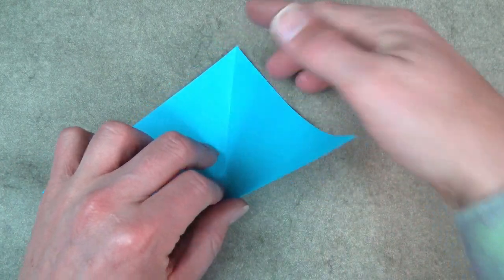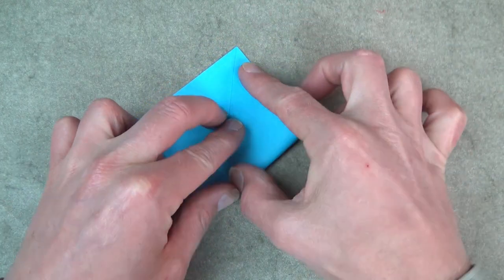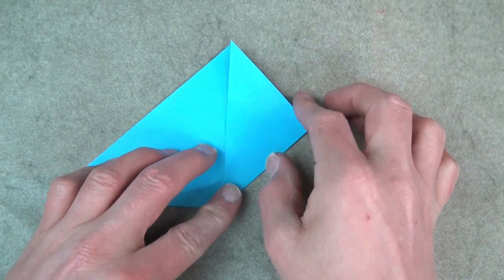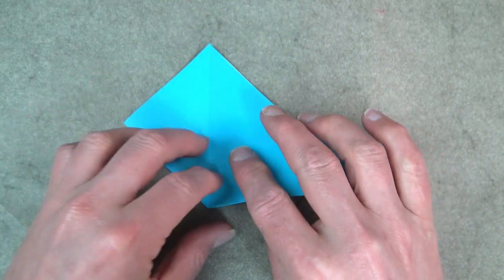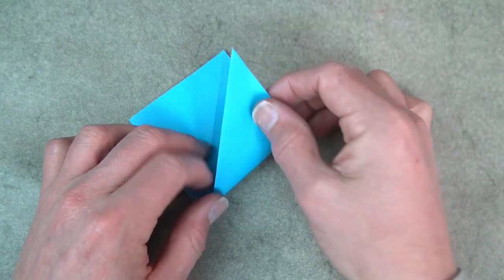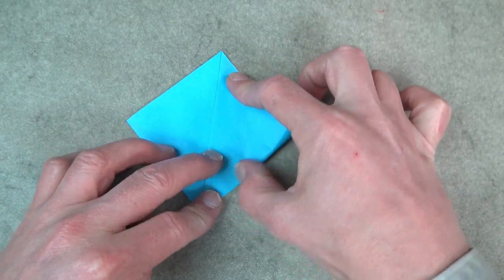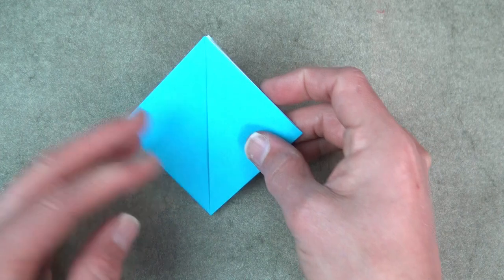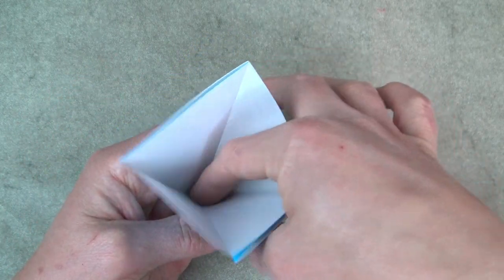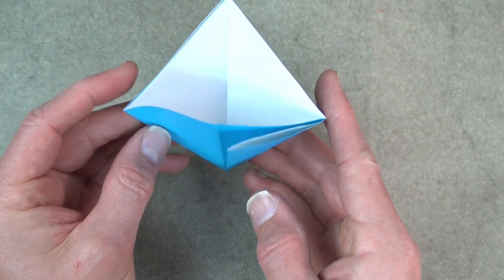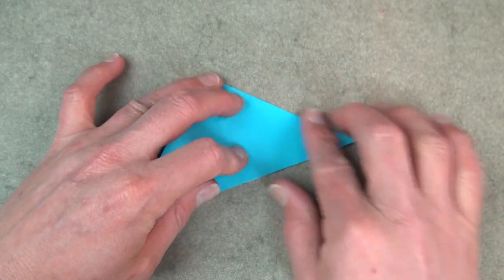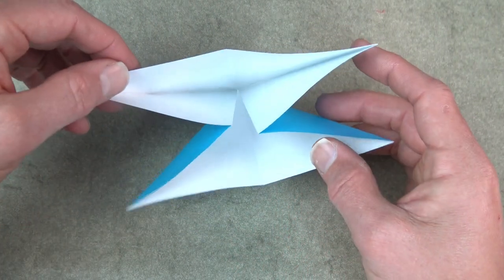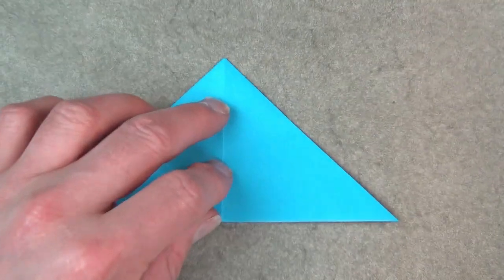Fold the corner to the top, and turn over and fold this corner to the top. Open the big pocket, put your finger inside and push the left and right sides together and flatten. And the water bomb base is complete.